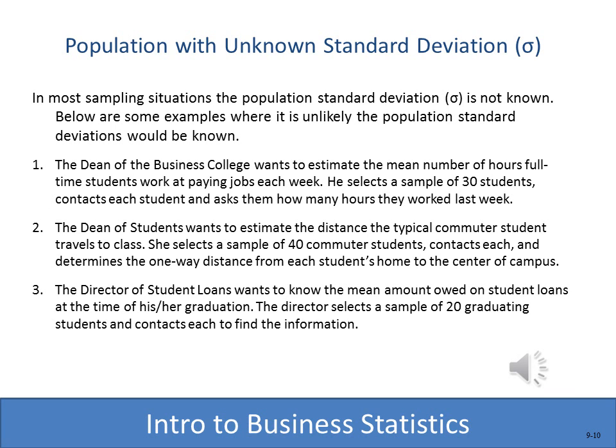One requirement for the confidence interval formula we just used was knowing the population standard deviation, which enables us to use the z-score. Most of the time when we sample, we won't have the population standard deviation. In those cases, we use a different test statistic — the t rather than the z.